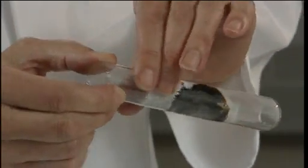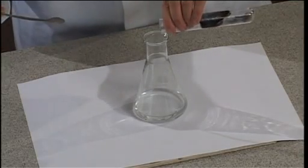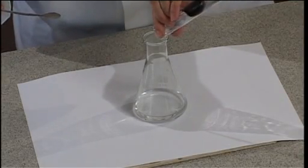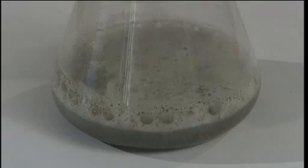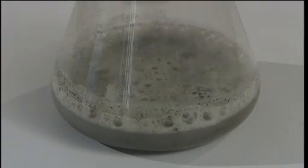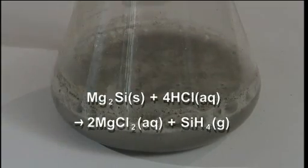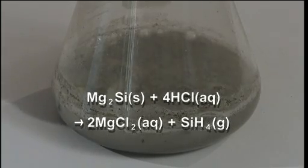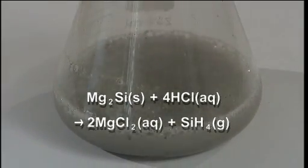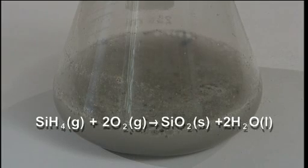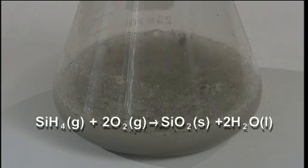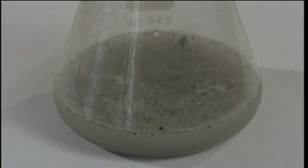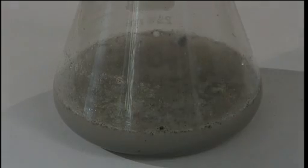Pour the contents of the tube into a beaker of two molar hydrochloric acid. You'll also notice small pops, these are often accompanied by yellow flames. These pops are caused by magnesium silicide reacting to form silanes. Silanes are hydrides of silicon analogous to alkanes. Silanes, unlike alkanes, ignite spontaneously in air due mainly to the weakness of the silicon-silicon and silicon-hydrogen bonds compared with their carbon analogues. This is a point that could be discussed with post-16 students.